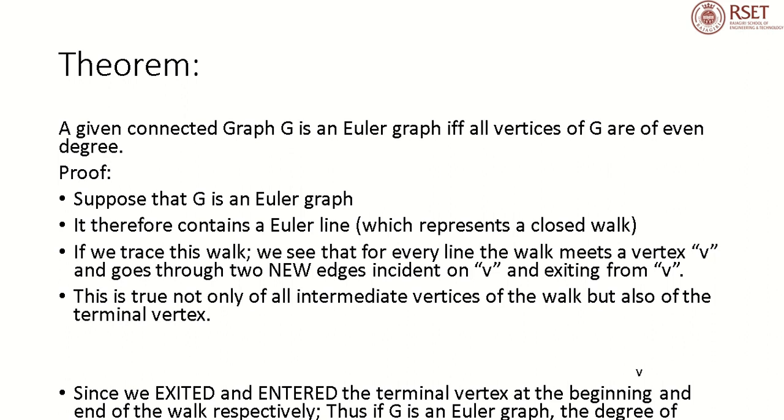The proof is: first assume that G is an Euler Graph, and we have to prove that the degree of each vertex in the graph is even. Since G is Euler, it contains an Euler line which represents a closed walk. If we trace this walk, we see that for every line, the walk meets a vertex V and goes through two new edges incident on V and exits from V.